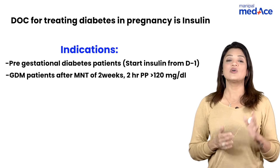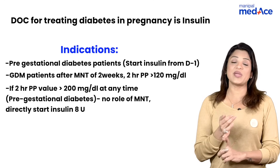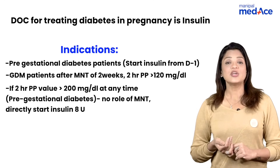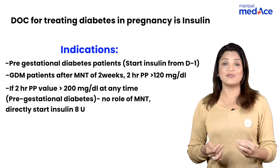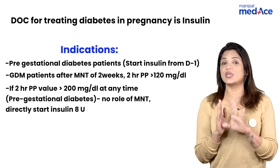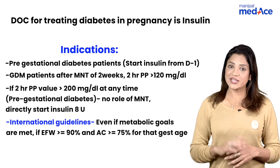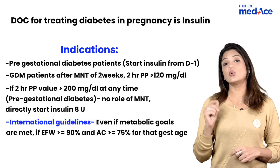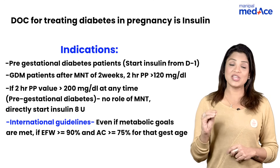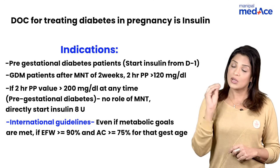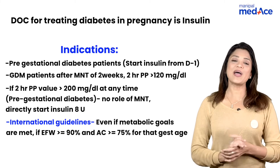There are four indications to start insulin. First, a GDM patient on MNT and diet control who still cannot maintain metabolic goals for at least two weeks. Second, if the postprandial sugar at any time is more than 200, we start insulin directly without trialing MNT. Third, international guidelines say even if metabolic goals are met, if sonography shows fetal weight more than the 90th percentile and abdominal circumference more than the 75th percentile, start insulin.